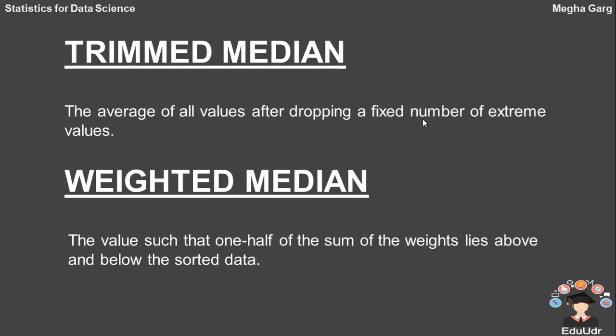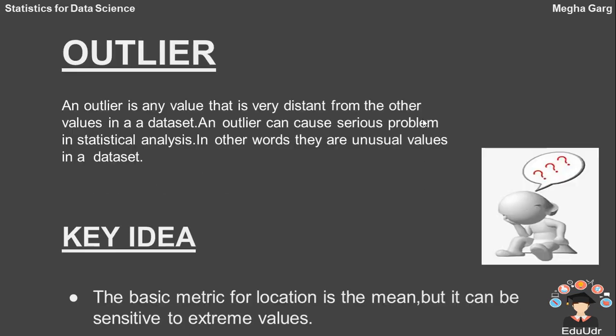Now, come to the types of median that is trimmed mean and weighted mean. The trimmed mean, the average of all values after dropping a fixed number of extreme values, and the weighted mean is the value such that one half of the sum of the weight lies above and below the sorted data.